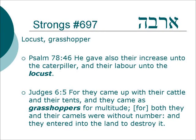Another interesting word which comes from this root is Arbeh, with an Aleph, and it's translated variously as locusts and grasshoppers — and you can imagine that when these bugs swarm, there's a multiple number beyond which we can understand. Psalm 78:46 — He gave also their increase unto the caterpillar, and their labor unto the locust. Judges 6:5 — For they came up with their cattle and their tents, and they came as grasshoppers for multitude, for both they and their camels were without number, and they entered into the land to destroy it.